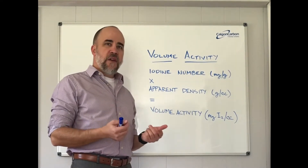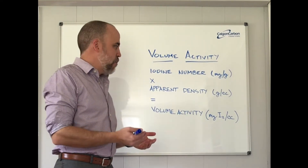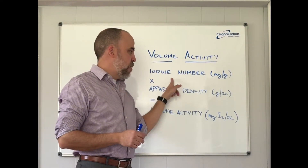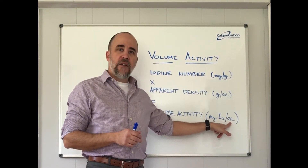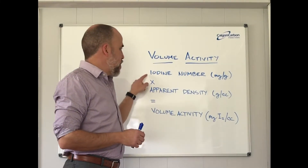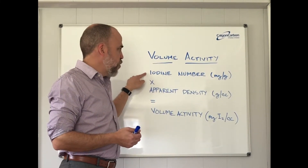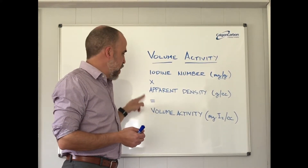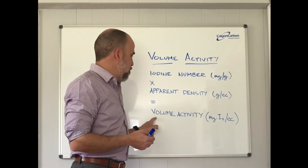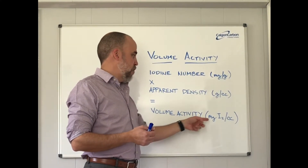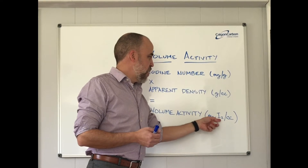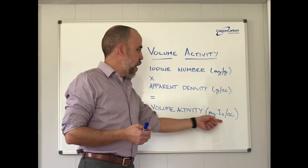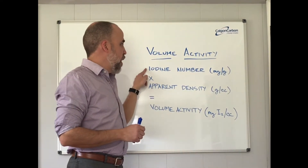When carbon is applied, we talk about contact time, we talk about bed volumes. The only way that we can consider the value of the iodine number is if we actually get it back to that volume. It's actually quite simple to do: you take the iodine number that you're specifying and you multiply that value times the apparent density. That now normalizes that value into what we like to call volume activity — the activity of the carbon in milligrams of iodine absorbed per cc of carbon. What this means is that you capture within the volume of your bed the value of the iodine number.